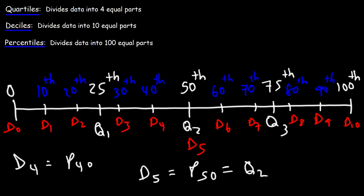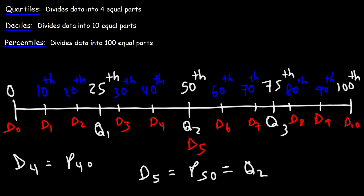Now you can visually see how quartiles, deciles, and percentiles divide the data into different equal parts. What is the meaning of a percentile? The 70th percentile, for example, is a data point where 70% of the entire data is less than or equal to that data point. It can also mean that 30% of the data is greater than or equal to the data point.